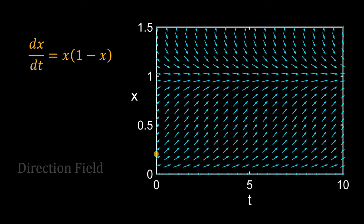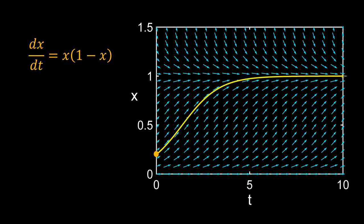Let's take a point at t = 0. Following the arrows from that position, we can track the change in x with time. Joining the arrows followed by the system, we get a curve. This curve is called the integral curve.